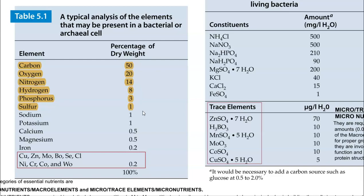Apart from these, sodium, potassium, calcium, and magnesium are required commonly in traces. The next list of elements are required in very small concentrations — these are micronutrients or micro elements, which include copper, zinc, molybdenum, boron, and selenium.